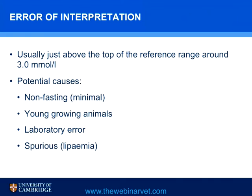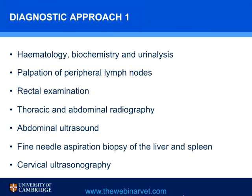Error of interpretation refers to cases with a calcium concentration just above the top of the reference range, usually around 3.0 millimoles per liter — these are mild hypercalcemic cases. Potential causes include non-fasting, which has a fairly minimal effect on total calcium; young growing animals, which can have higher calcium levels than older animals; laboratory error; and spurious elevations associated with lipemia and hyperlipidemia. The diagnostic approach to hypercalcemia should include a routine hematology and biochemistry screen.